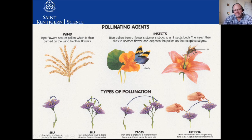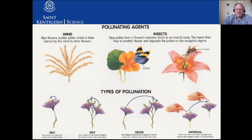Cross-pollination is from one plant to another plant, and this is ideal for the plant because it creates variation. Lastly, we have artificial pollination, especially in industries like the fruit industry, where humans go around with a little paintbrush and paint the pollen onto the stigmas. This is very useful in research.